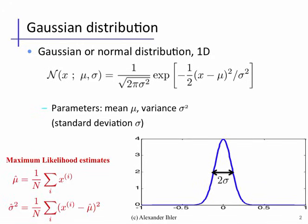Also useful are the classic maximum likelihood estimators. Given some data, if we want to estimate the distribution, we can estimate the mean as the empirical mean of the data points by taking the average of the data, and estimate the variance as the empirical average of the centered data points squared. So we take x, subtract the empirical mean, square those points, and average them — that gives us the variance.